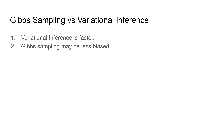I would like to make two observations comparing Gibbs sampling and variational inference for LDA. First, running variational inference was much faster than running the Gibbs sampling method, which is a general advantage of variational inference over Markov chain Monte Carlo. My second observation is that MCMC methods will give an unbiased estimate of the posterior, while variational inference will give a biased estimate, since the posterior is outside the family of variational distributions.